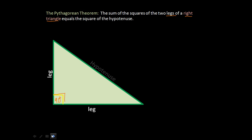The third side has a special name: it is called the hypotenuse. It's very important to know which one is the hypotenuse because setting up the formula correctly requires you to identify it. If you make an arrow out of the 90-degree box, it actually points to the hypotenuse. That's how you know — it's also the longest side of the triangle.